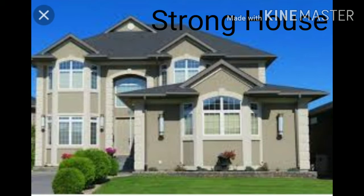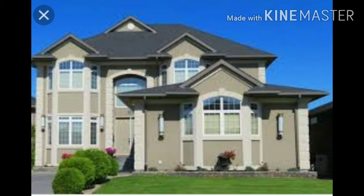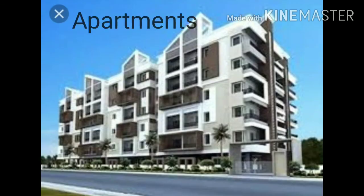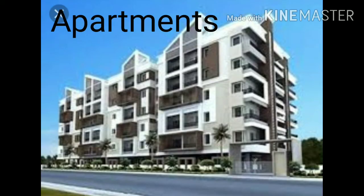Most people live in strong houses. They last longer than other houses. So which are the materials used in making strong houses? Houses made of wood, bricks, and concrete are strong and permanent. जिन घरों में wood, bricks, या फिर concrete यूज होता है, ऐसे घर मजबूत और permanent होते हैं।